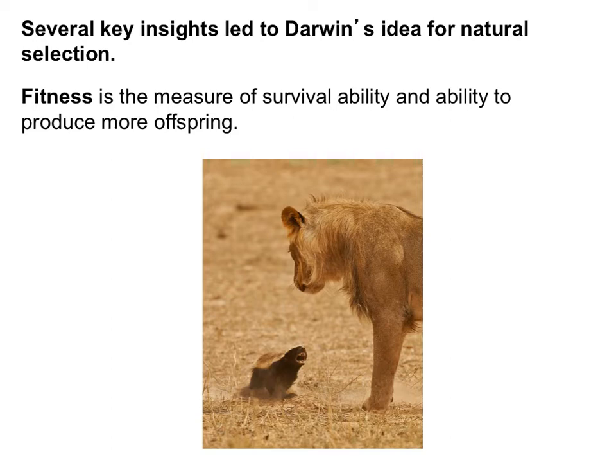Another term to know is fitness. You may have heard 'survival of the fittest' without knowing what it meant. Fitness is the measure of survival ability and the ability to produce more offspring. If an organism is fit, it can survive in its environment. But it also needs to be able to reproduce — that's really key when talking about evolution, because it's all about change over generations.